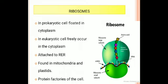In prokaryotic cells, the ribosomes are floating in the cytoplasm. In eukaryotic cells, they freely occur in the cytoplasm, and they are also attached to the RER — the rough endoplasmic reticulum. The outer surface of the rough endoplasmic reticulum consists of ribosomes. Ribosomes are also found in the mitochondria and plastids.